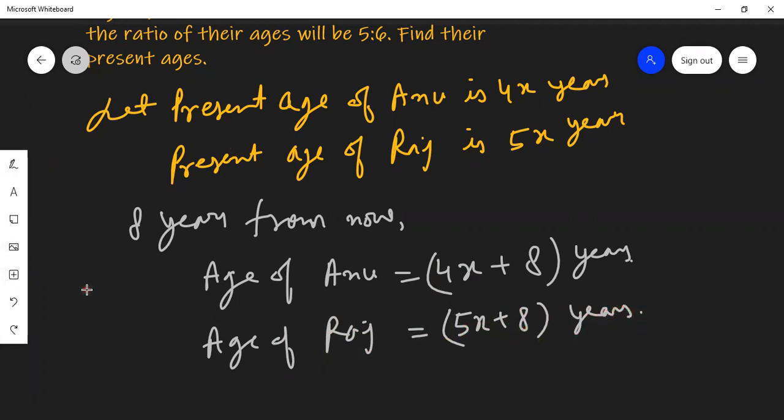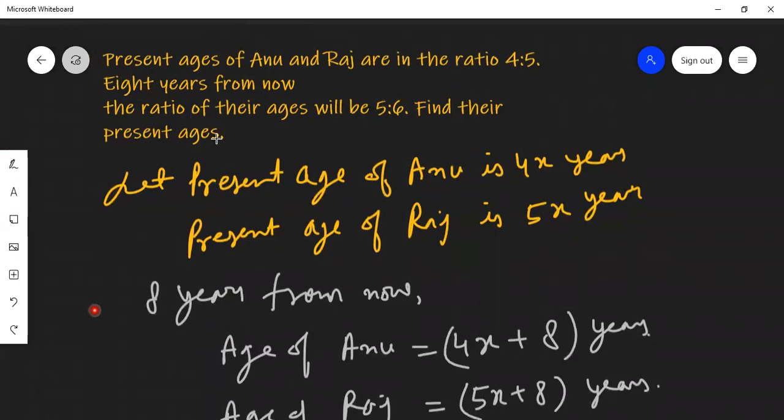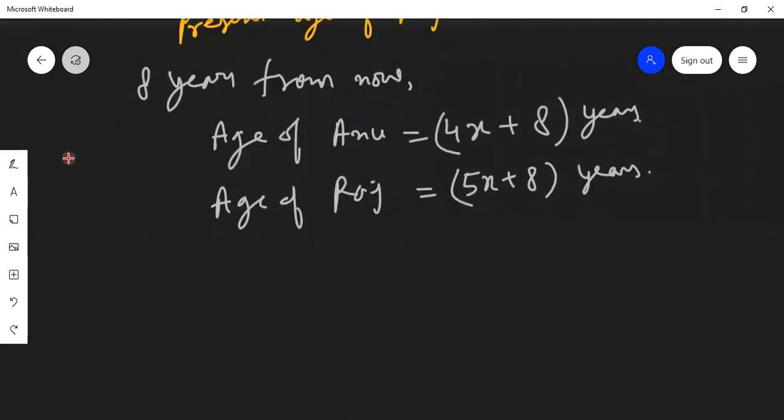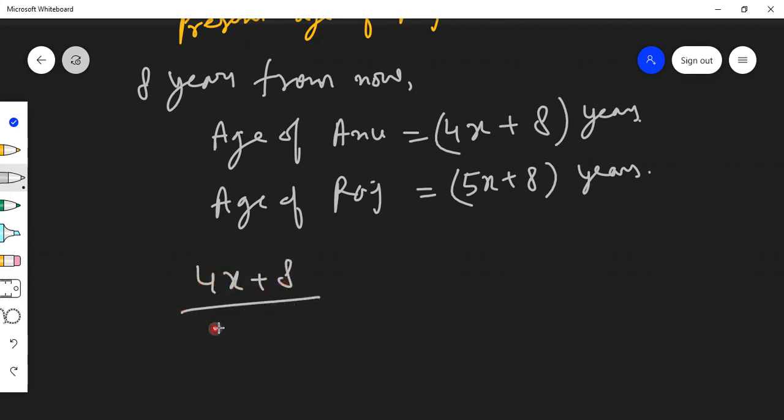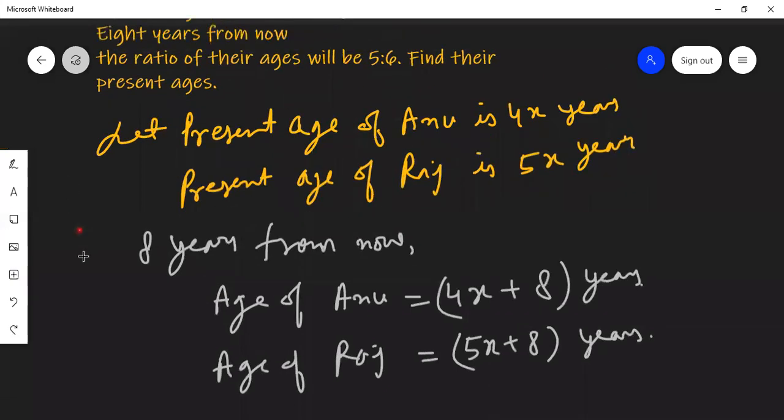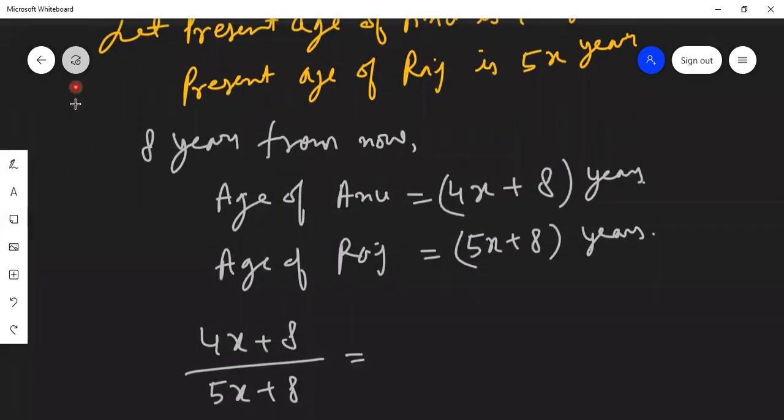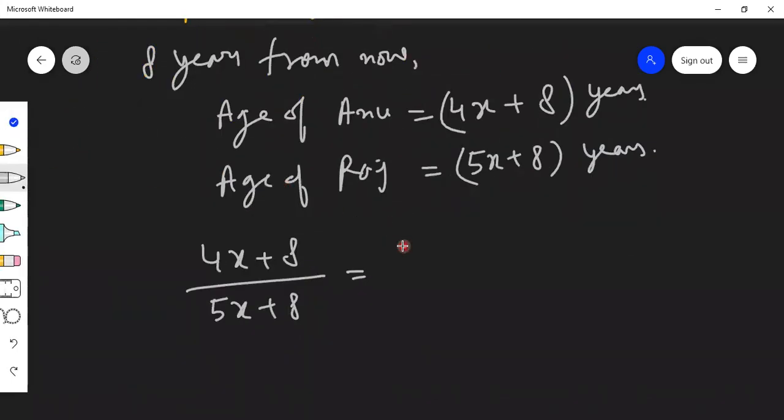Now, the ratio of their ages will be 5 is to 6. That's what he's saying. So we can write this information into mathematical equation. Ratio of their ages means 4x plus 8 divided by 5x plus 8. This ratio they are talking about, and that ratio will be 5 is to 6. So we got this beautiful mathematical equation which can be easily solved.